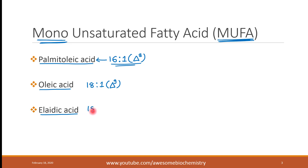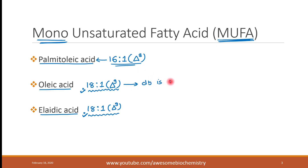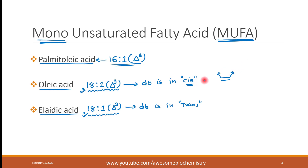You'll notice that oleic acid and elaidic acid have the same shorthand notation, but they are not the same structure. In oleic acid, the double bond is in cis configuration — meaning the two opposite groups are on the same side. In elaidic acid, the double bond is in trans configuration — meaning the opposite groups are on opposite sides. More information regarding cis and trans configuration will be covered in subsequent lectures.